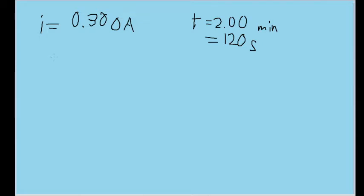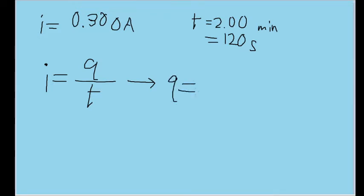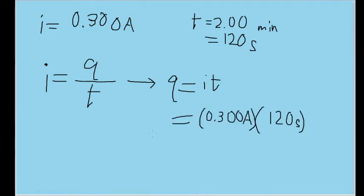Let's first find out how much charge that is. The formula for current is charge over time, so we can see that charge will be equal to current multiplied by time. 0.3 amperes, or coulombs per second, times 120 seconds is equal to 36 coulombs.